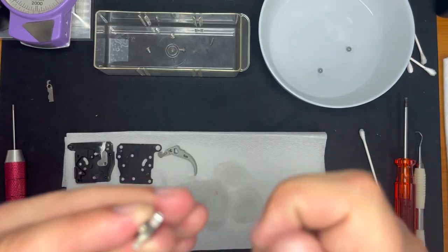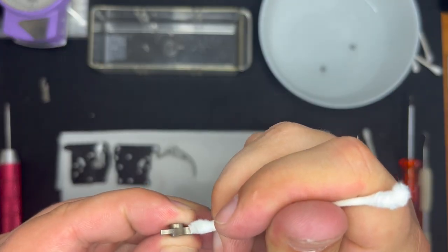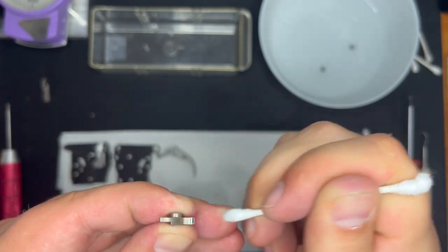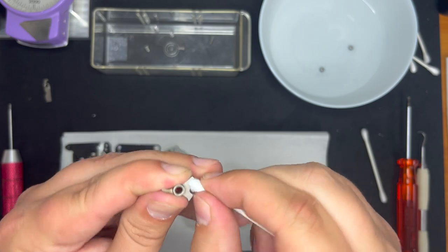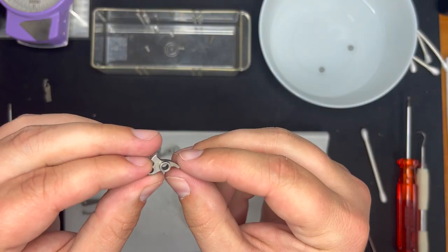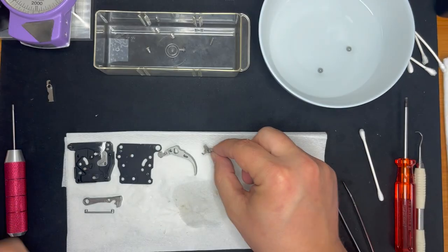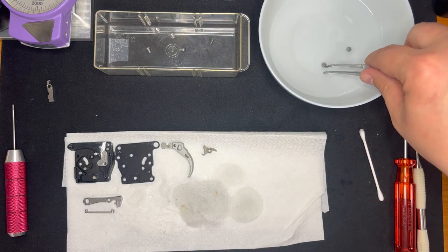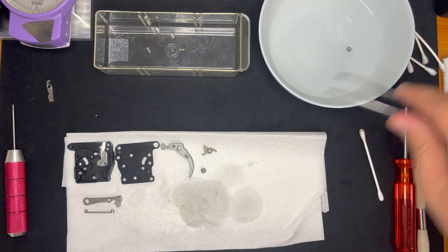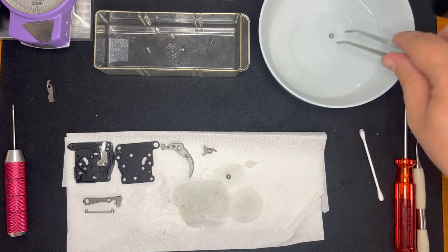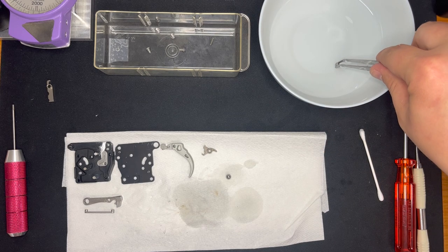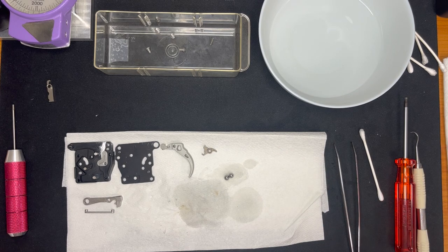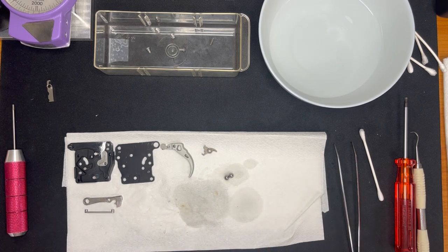This sear surface right here, very important. Get that. This one too. This piece is looking pretty good. Last but not least, we have our balls here. Put those on a paper towel. Now that we have all this out here, we're ready to reassemble.